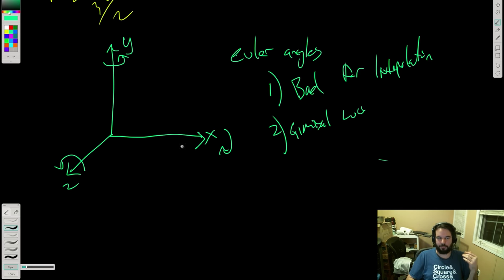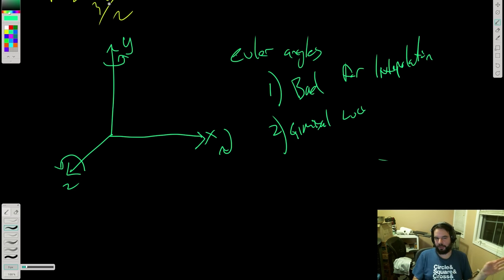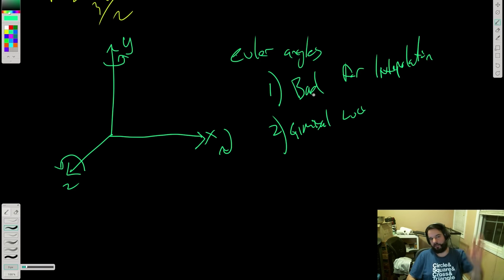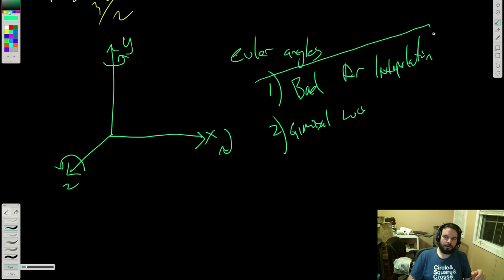Because you have three degrees of freedom, if you rotate such that your x and y axes line up with each other, there's no way to re-separate those axes and you lose a degree of freedom — you're basically losing a basis vector of rotation. It's not that big a problem in practice unless you're making a flight sim. But the fact that you can't interpolate them easily is a really big problem.